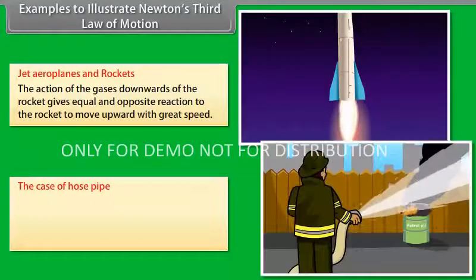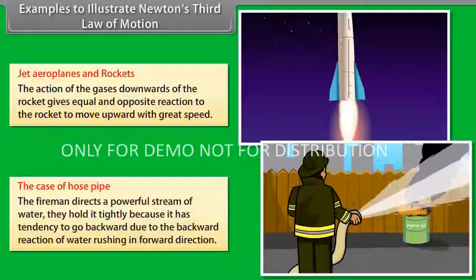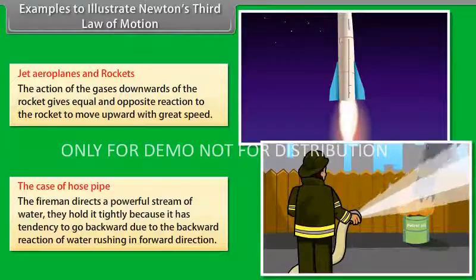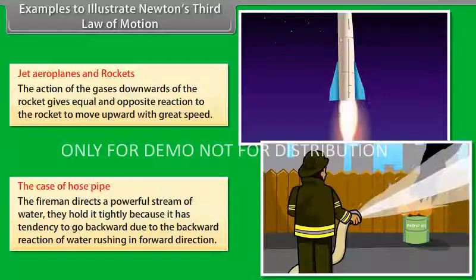The case of the hose pipe: The firemen direct a powerful stream of water. They hold it tightly because it has tendency to go backward due to the backward reaction of water rushing in forward direction.